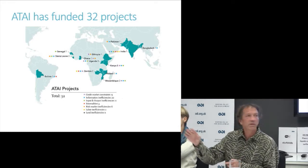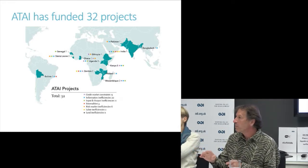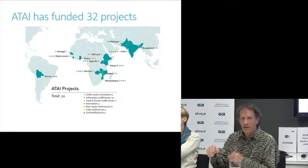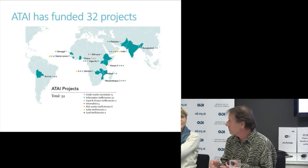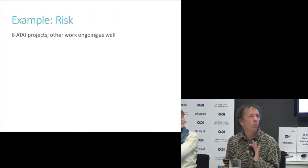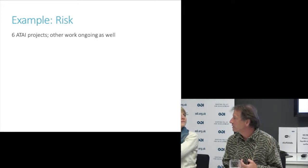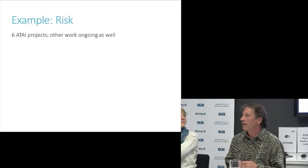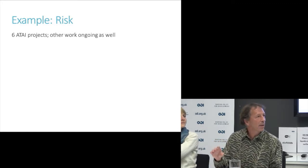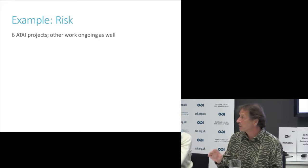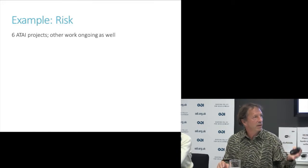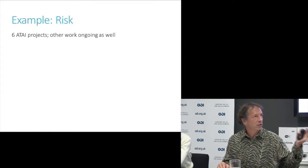There are 32 projects funded so far as part of this initiative, plus lots of other research around the world motivated by similar questions. Let me give just one example of an area with a lot of research. Risk — farmers not adopting new technologies because it's risky. There have been six projects funded by DFID and Gates through ATTI to look at this.